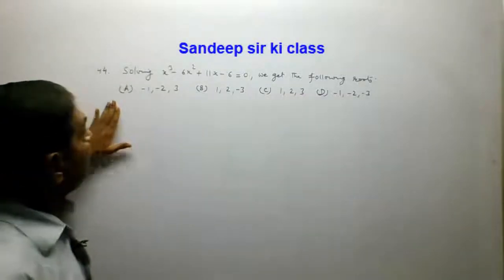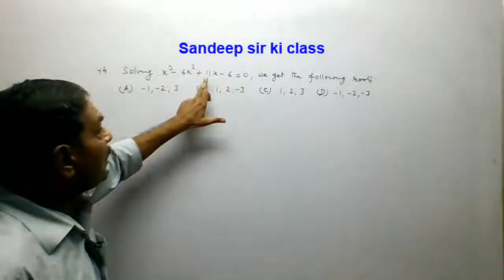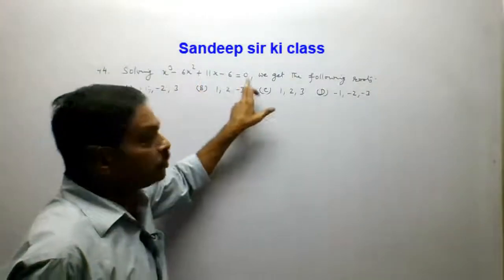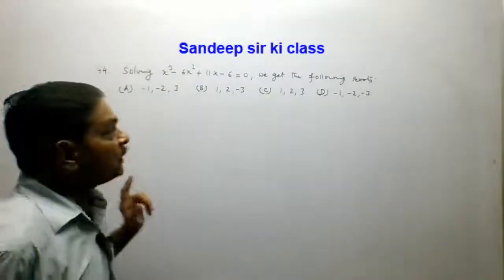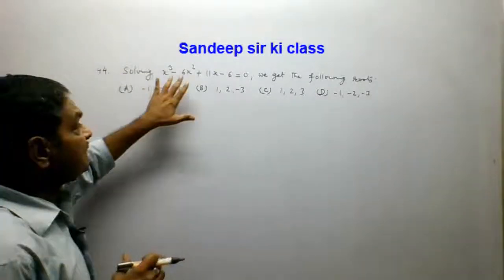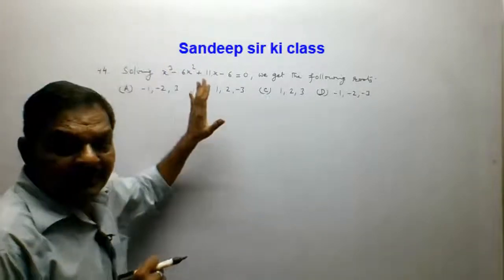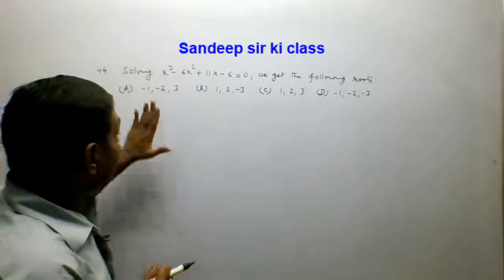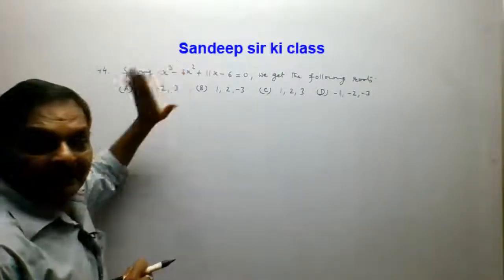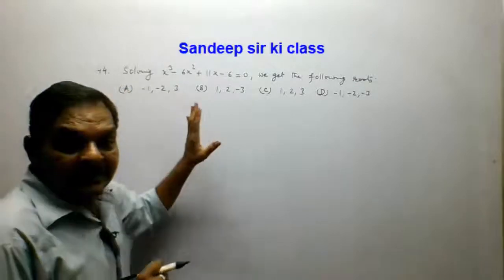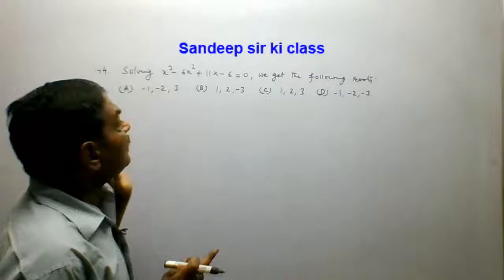Question number 44. The equation given is x³ - 6x² + 11x - 6 = 0, and we need to find the roots. Four options are given. Solving by conventional method is lengthy and tedious, so we will substitute the option values into the equation and see which option satisfies it.